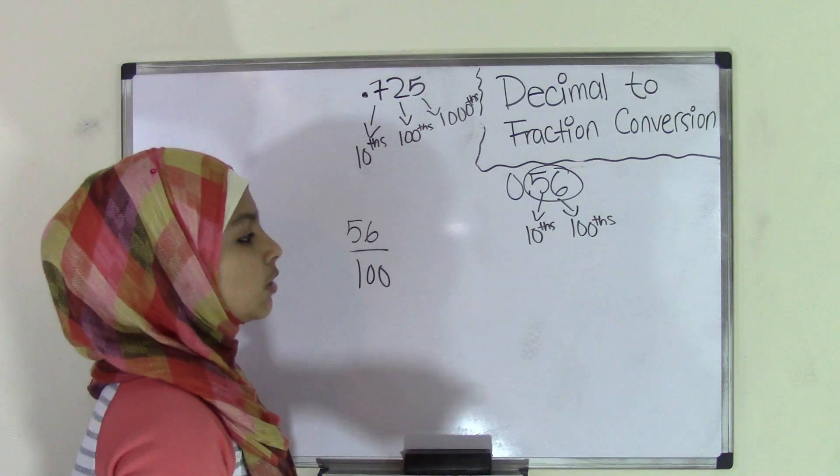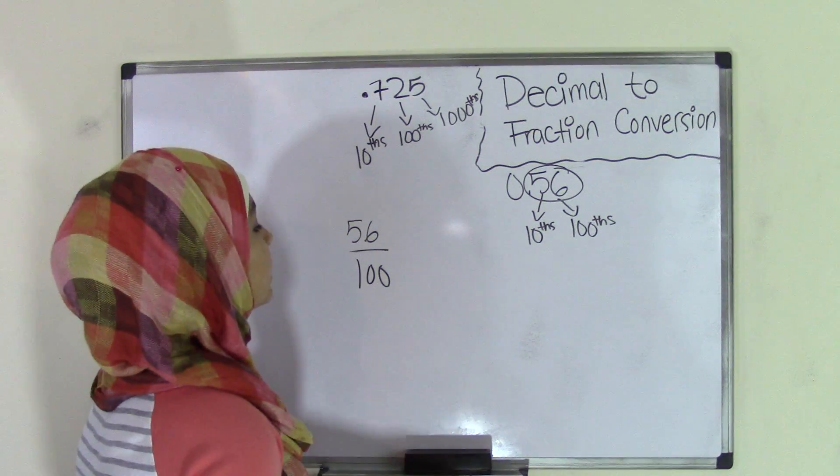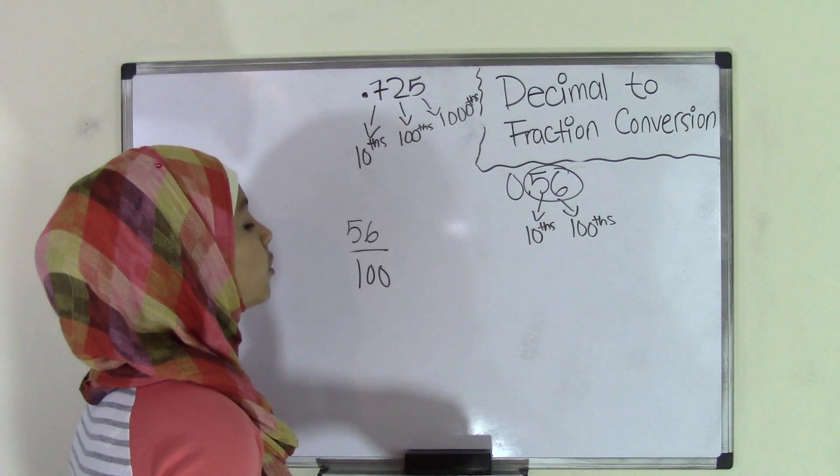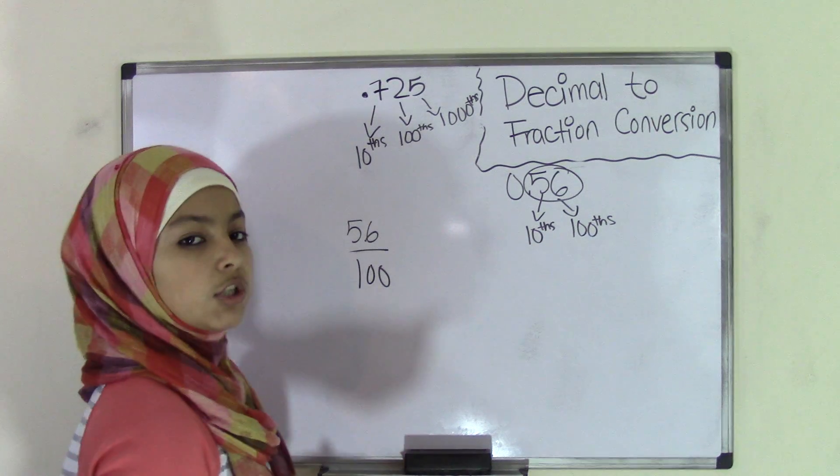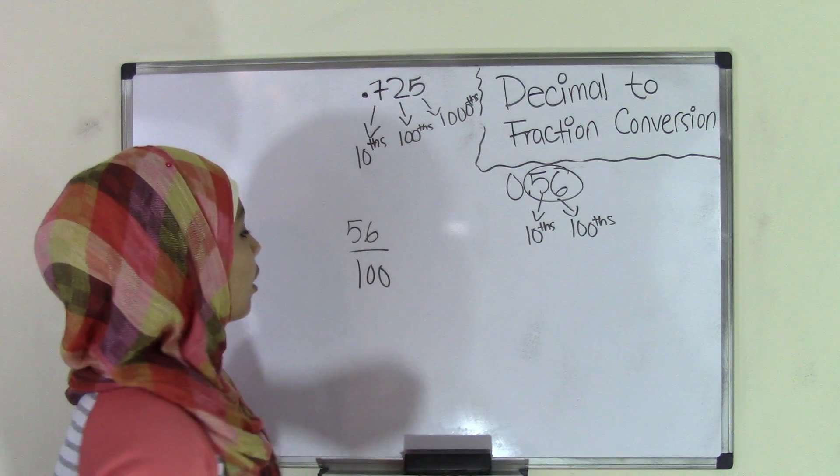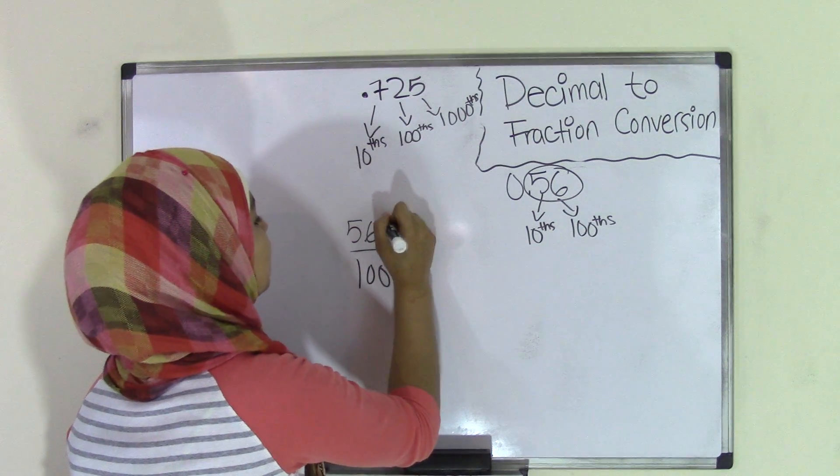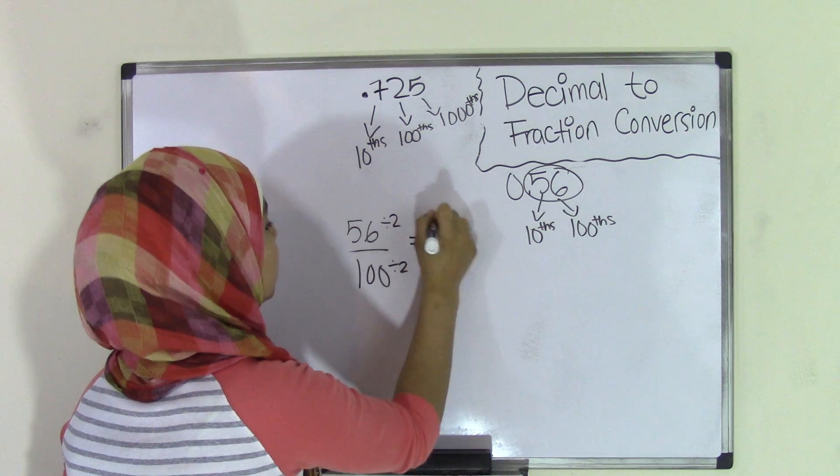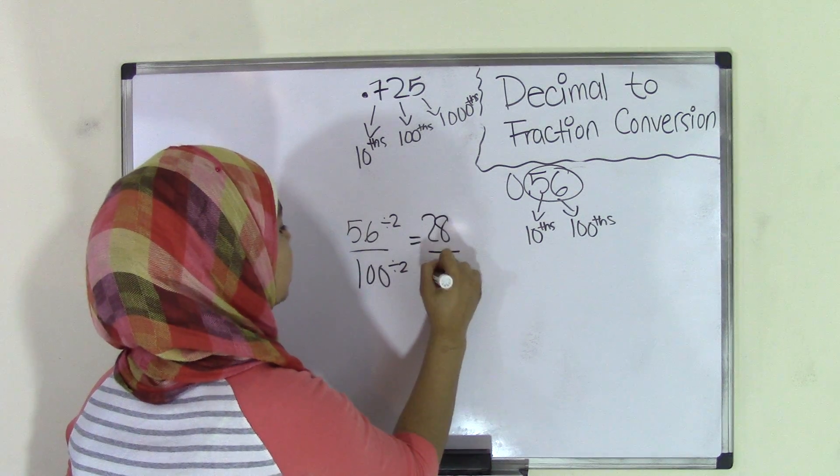So 56 hundredths converted into a fraction is 56 over 100. Now always remember that it is important to reduce or simplify your fraction. So if we divide this, so 56 divided by 2 and 100 divided by 2, we get 28 over 50.